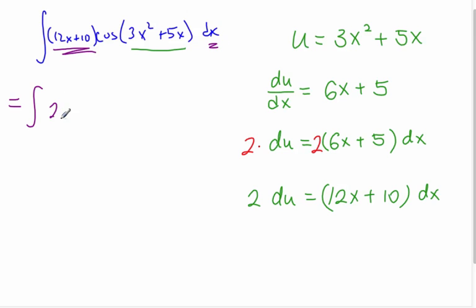And so I can change the 12x plus 10 dx into 2 du. So I get 2, and the cosine, well, that is u. And then our du. And so now that looks more and more familiar. I always like to pull the constants out in front. And so my integral is as tidy as I can make it.